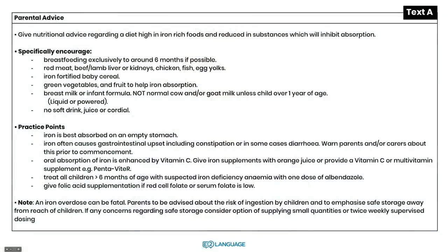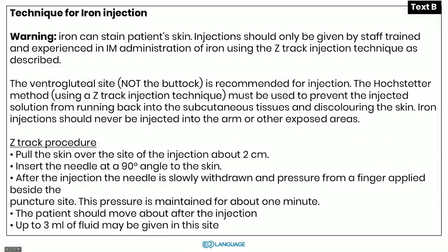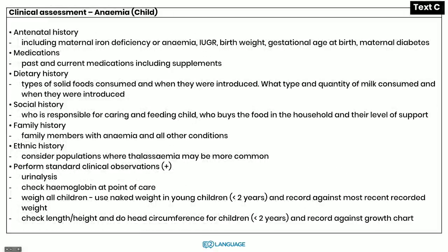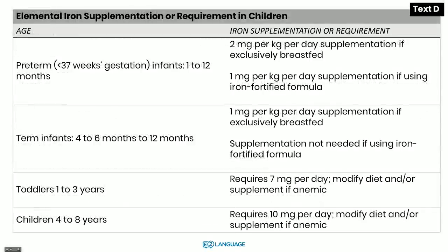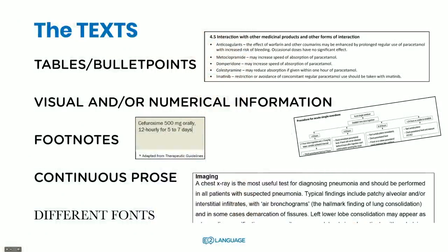Let's quickly have a look at the different text types. Here's text A, it might look like this. Here's text B, that's the second one. There's a text C, it looks a little bit different and has some dot points. And then text D is some sort of table. One of these texts will always be a sort of graph or a table or something like that. The different texts you'll get will be tables, bullet points, visual and/or numerical information like some sort of flowchart. There might often be footnotes, you might get continuous prose like a paragraph, and these will also be in different fonts.